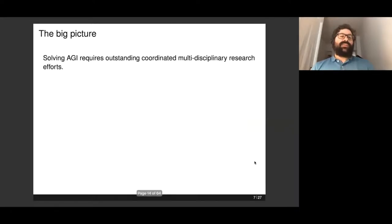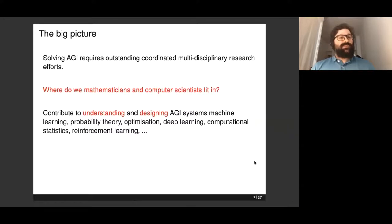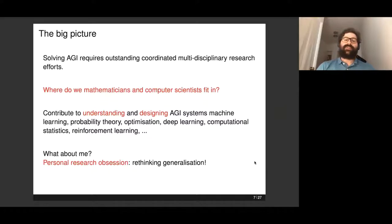So the big picture here is that since we need this coordinated multidisciplinary research effort, there's a legitimate question on where mathematicians and computer scientists fit in. I'm affiliated with UCL and INRIA, both extremely renowned institutions for mathematicians and computer scientists, but it's still a bit of a struggle to understand where they fit in that picture. The way I see it, we can and should contribute to understanding and designing systems in artificial intelligence and try to provide a better understanding of what's at stake on the theoretical side. My personal research obsession is about generalization.